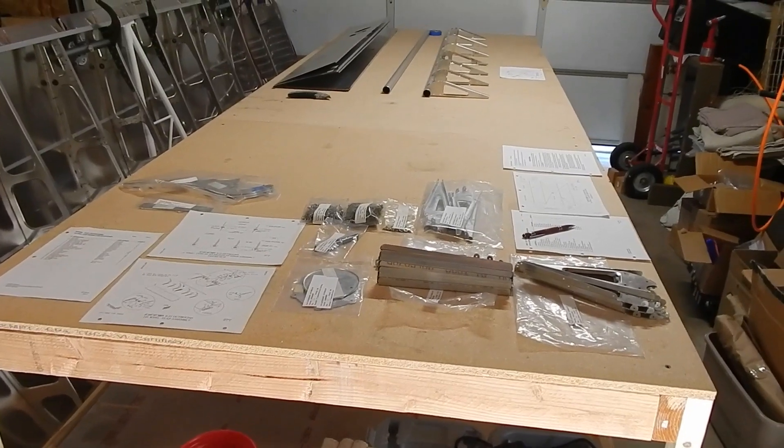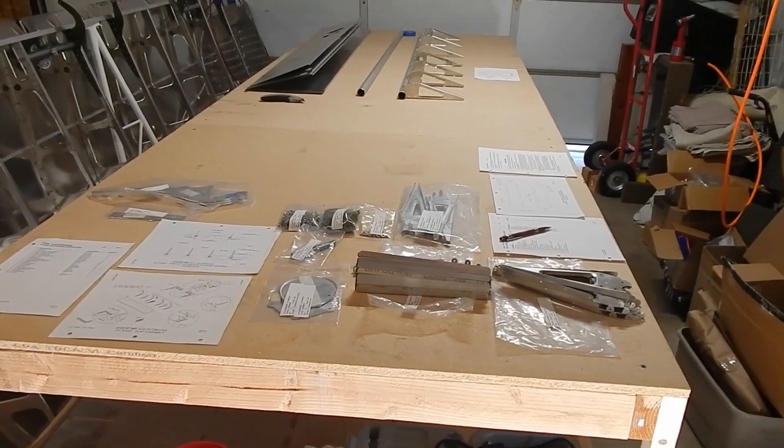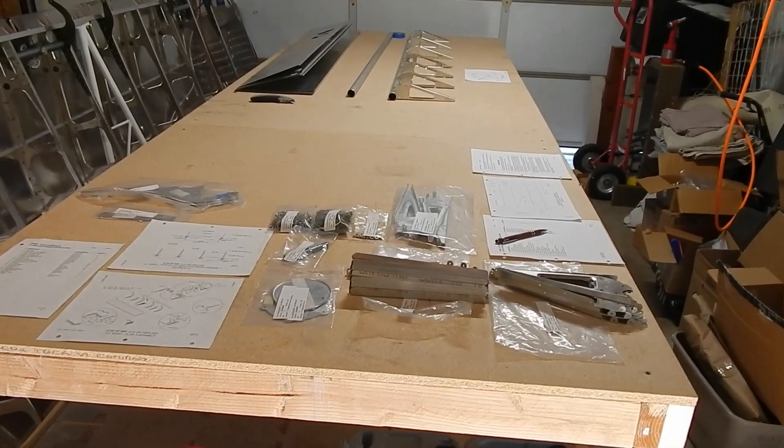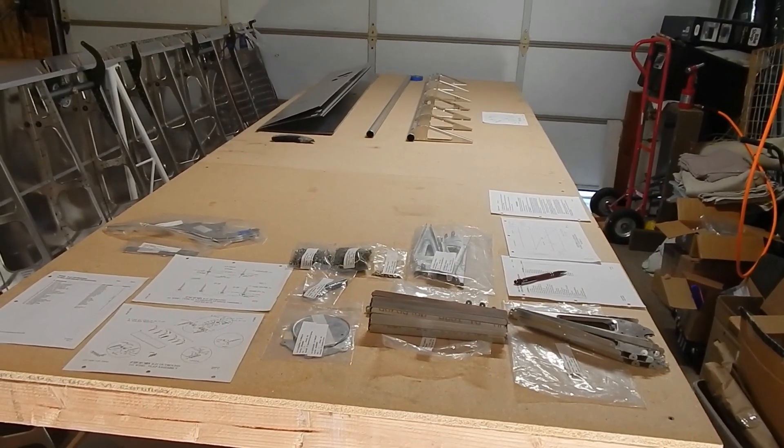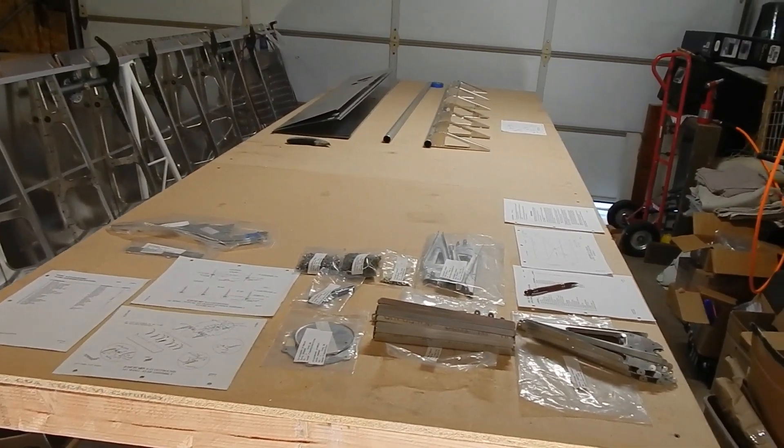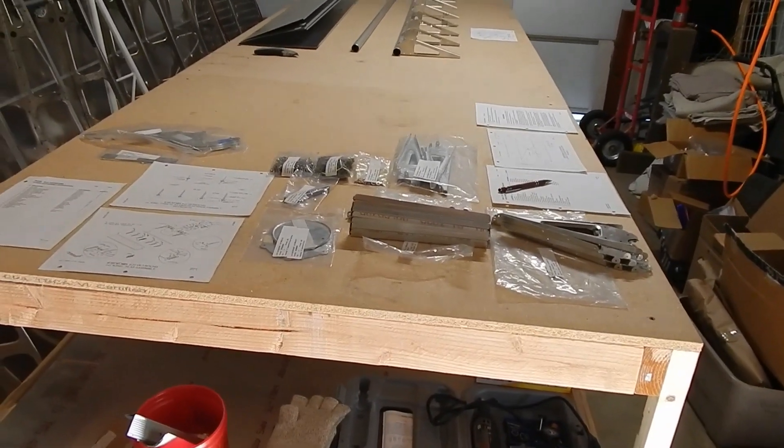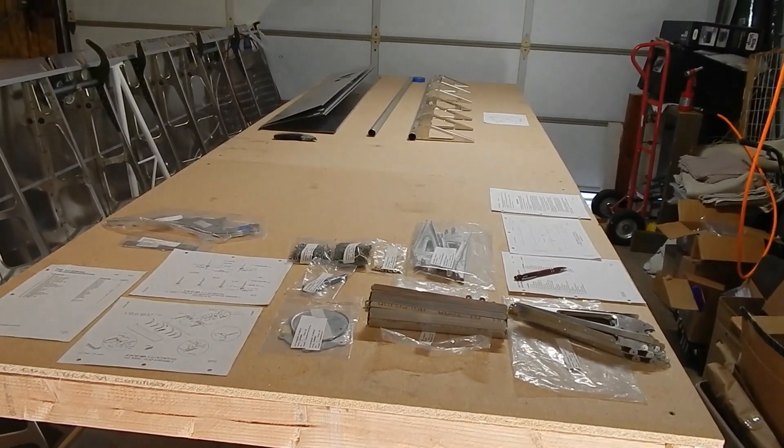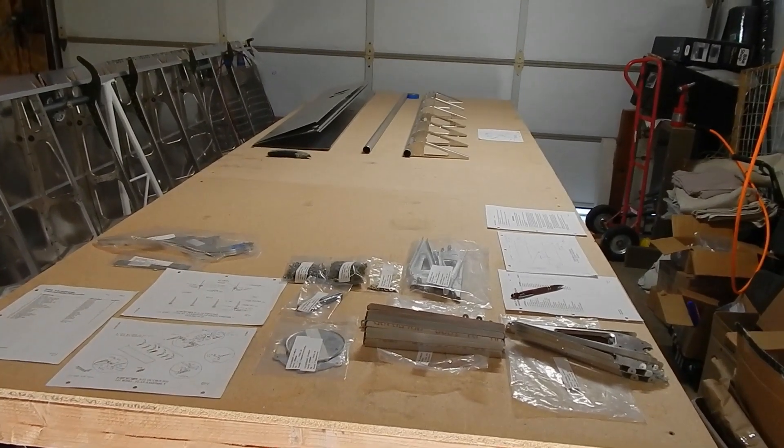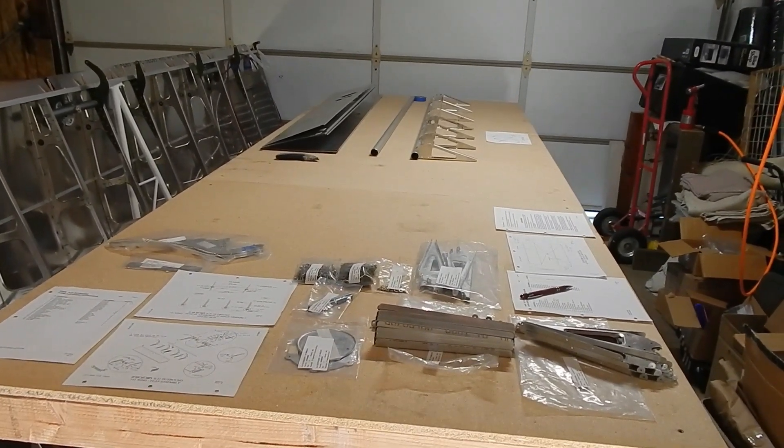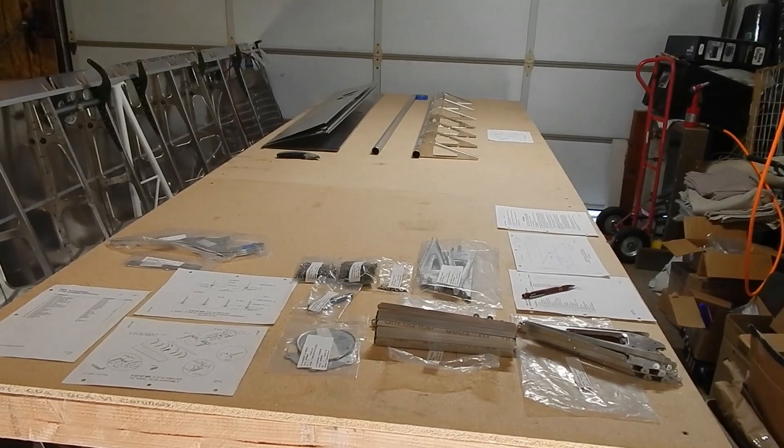I'm starting flap and aileron construction. I'm not gonna do a lot of videoing in this section because it's really a lot of the same. You got to bend your skins, lay out your assembly, rivet. There's not a lot of complication to this. I'm not gonna do a lot of filming. I'm actually gonna knock out all four flaps and ailerons just to get them done, and then I'll start on the other wing.